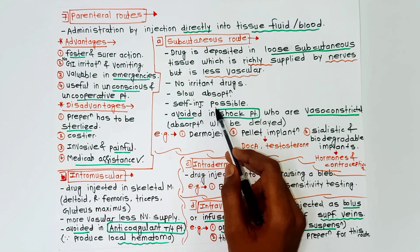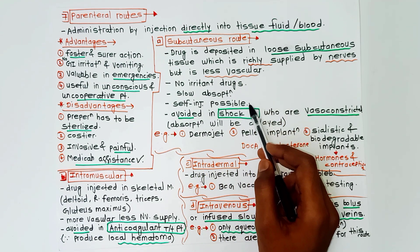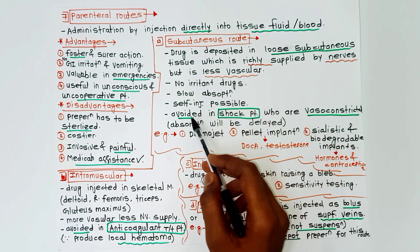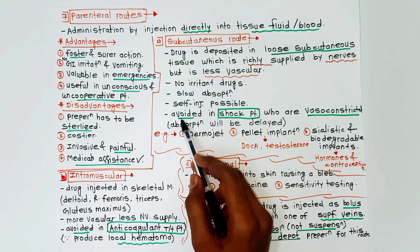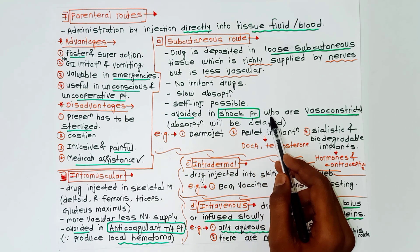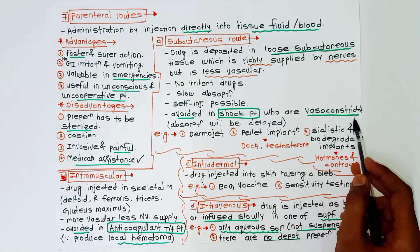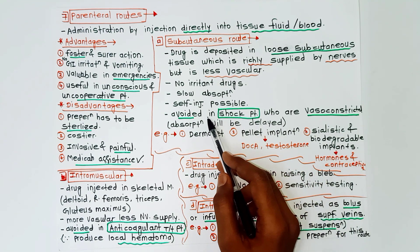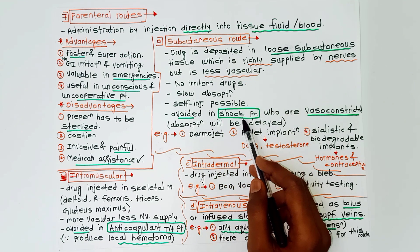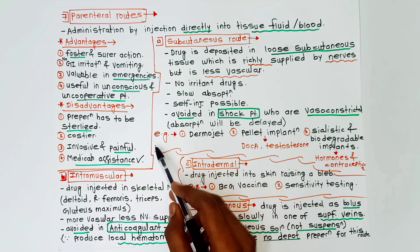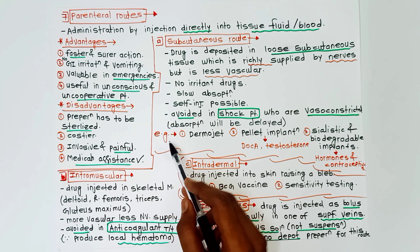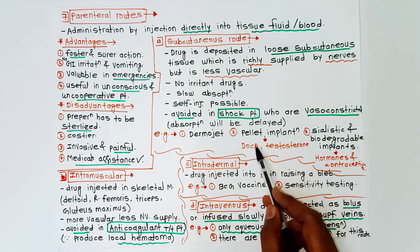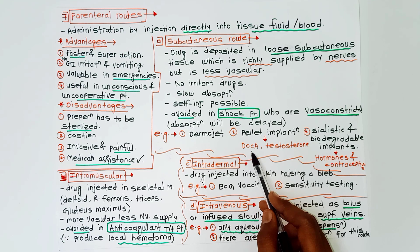Self-injection is possible in this case because deeper injection is not needed. And it is avoided in shock patients who are vasoconstricted, because absorption will be delayed if we use this route in shock patients.